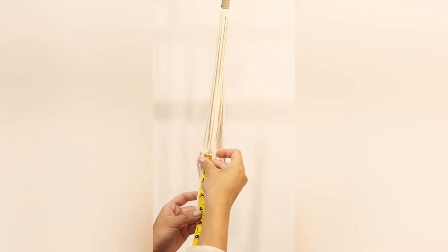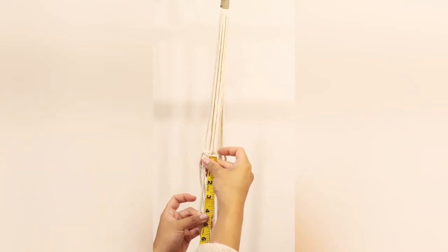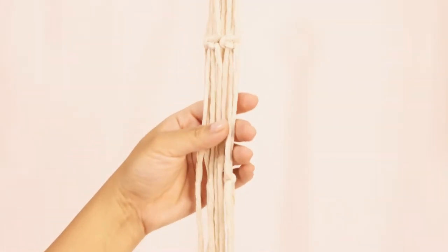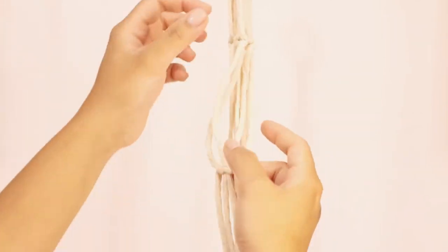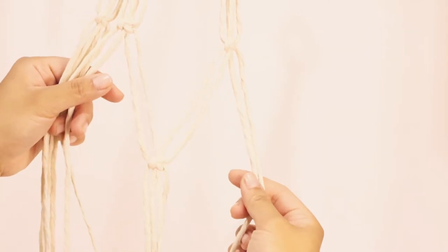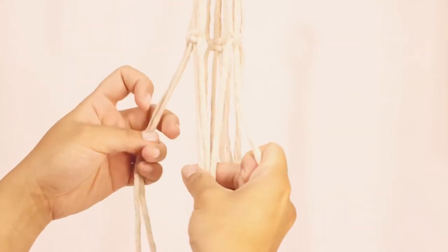From the first row of square knots, we're gonna make another row of square knots, so we'll need four inches of space. You'll see here we already created a V-shaped pattern and we're gonna make two more square knots.